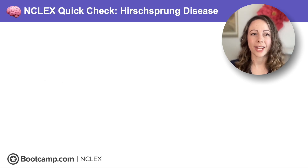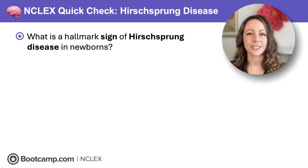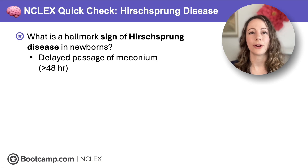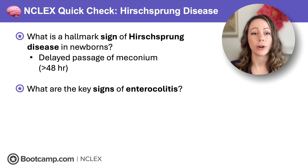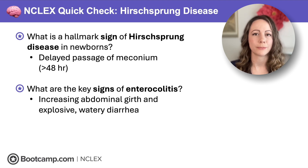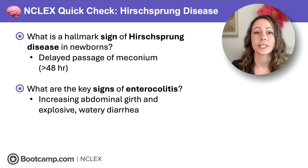NCLEX quick check: what is a hallmark sign of Hirschsprung disease in newborns? That slow bowel causes delayed meconium — greater than 48 hours after birth. What are the key signs of enterocolitis? Increased abdominal girth or explosive watery diarrhea — both are concerning and need to be reported to the provider right away.